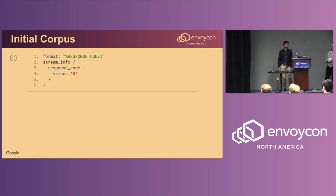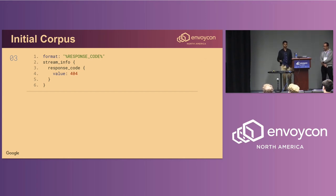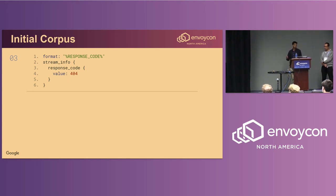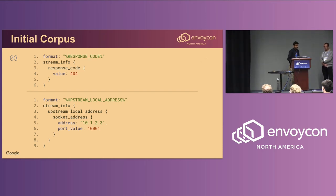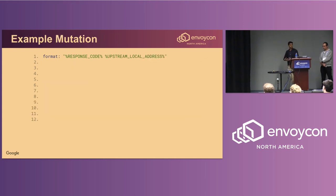The initial corpus is a set of example files checked into the source code alongside the fuzzer. Each example file is an instantiation of the fuzz input schema in text proto format. For example, one file shows the fuzzer what the response code formatting directive looks like, with a valid HTTP response code in the stream info. Another example includes an upstream local address directive with a valid IPv4 address and port number. With these inputs, the fuzzing engine can generate new realistic inputs via mutation.